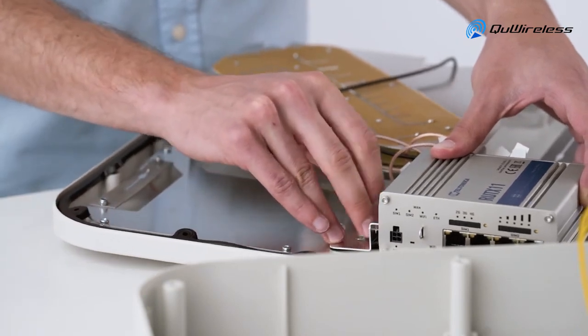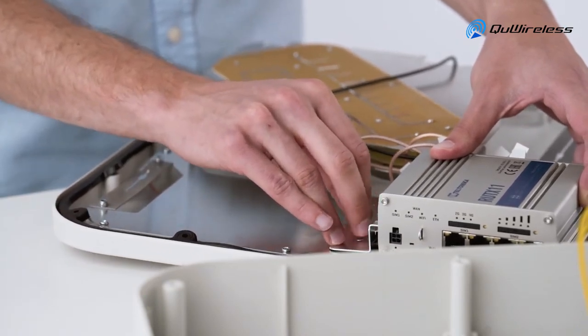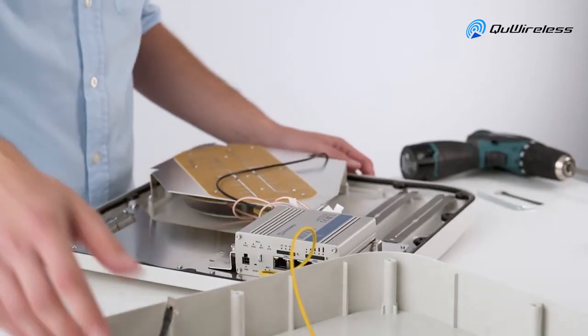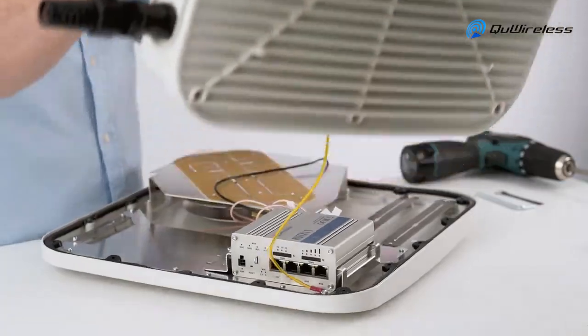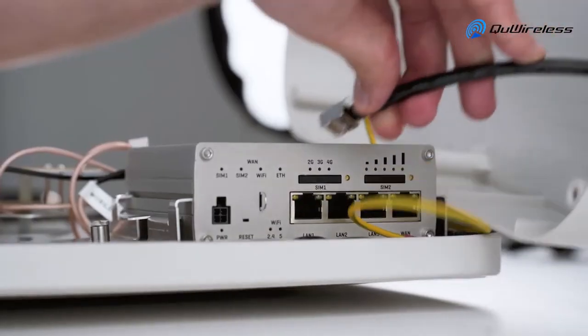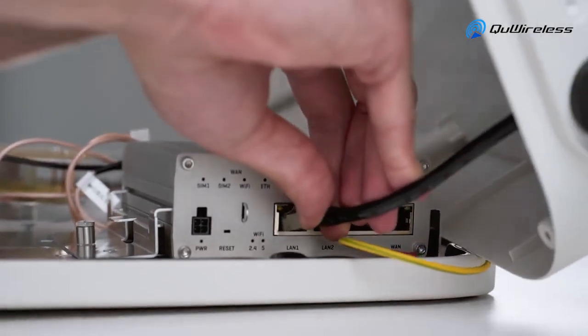And screw the bolt back. Now your router is secured. As a last step let's just put the enclosure back. But please don't forget to plug the ethernet cable to the LAN 1 port.